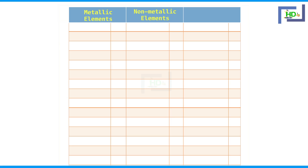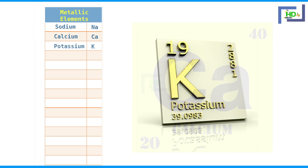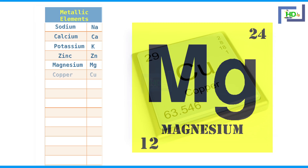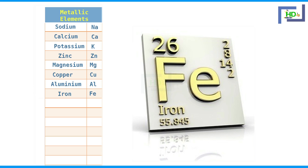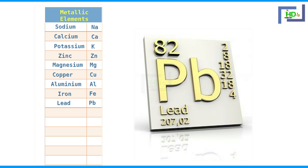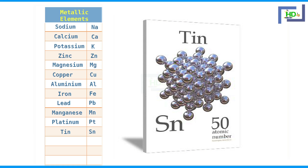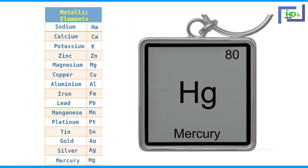This table gives some elements and their symbols. These are metallic elements: sodium Na, calcium Ca, potassium K, zinc Zn, magnesium Mg, copper Cu, aluminium Al, iron Fe, lead Pb, manganese Mn, platinum Pt, tin Sn, gold Au, silver Ag, mercury Hg.